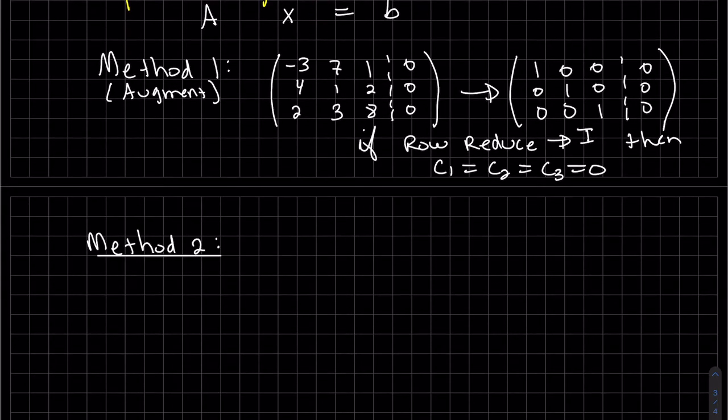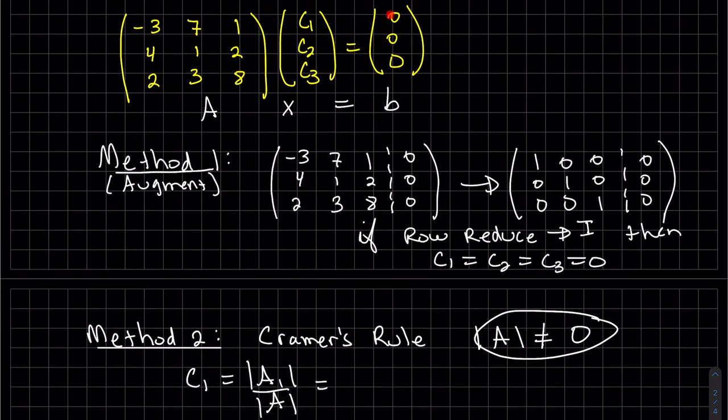Our method two, we can use Cramer's rule. And we can only use Cramer's rule if A does not equal zero. Okay, so method two can't be for all. But if we do use Cramer's rule, we'll get C1 equals to A1 divided by A. Again, but this can't equal zero. But what's going to happen is we're going to take our B and replace it with row one. Our B is zero. It gets replaced here. We get zero, zero, zero.